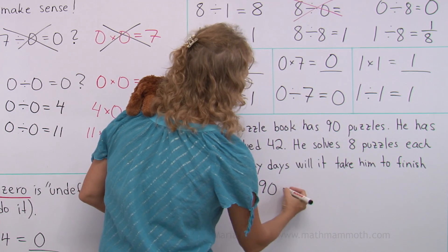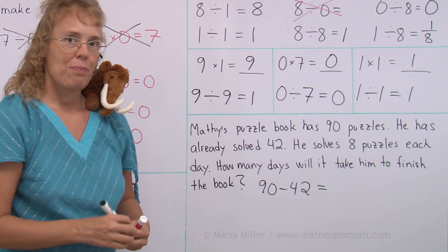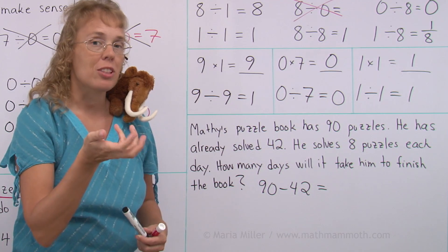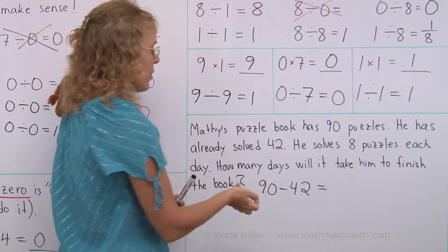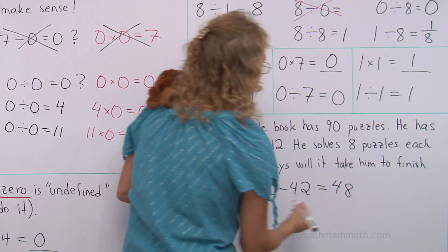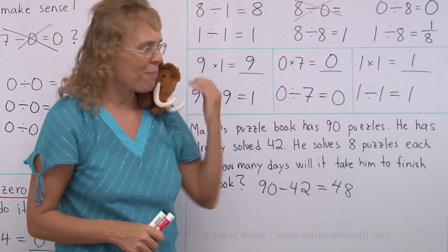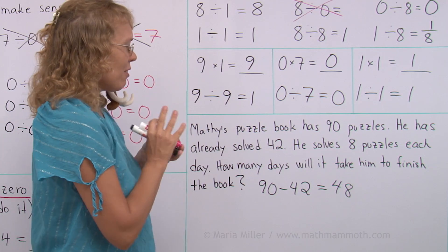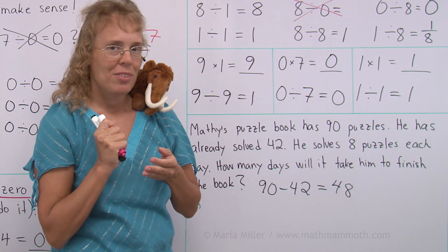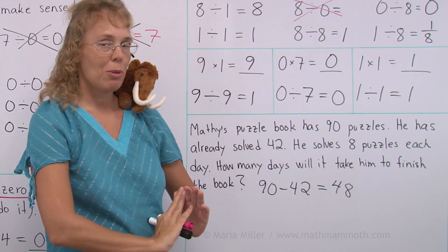So how many puzzles are there left to solve? You might write a subtraction. 90 minus 42. What's 90 minus 40? First of all, that's 50. And then subtract two more. So we will get 48 puzzles left to solve. You're almost halfway through your book, Matthew.